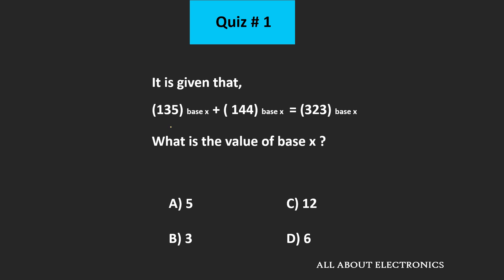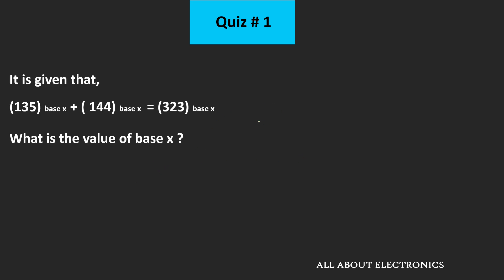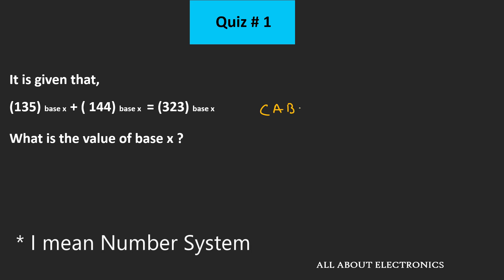In this quiz, the two numbers in the unknown binary system have been added and we have been given this resultant output. We have been asked to find the base of this number system. Now, let's say we have some unknown number ABC in the X binary system.